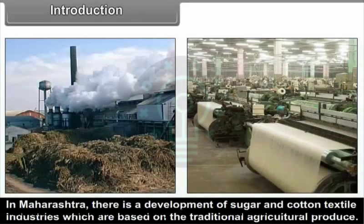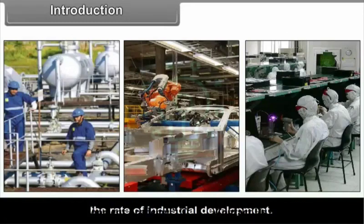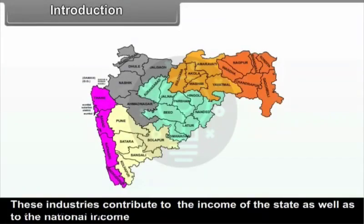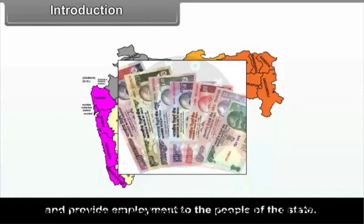In Maharashtra, there is development of sugar and cotton textile industries which are based on traditional agricultural produce. Also, the growth of chemical industries, automobile industries, and electronic industries have accelerated the rate of industrial development. These industries contribute to the income of the state as well as to the national income and provide employment to the people of the state.